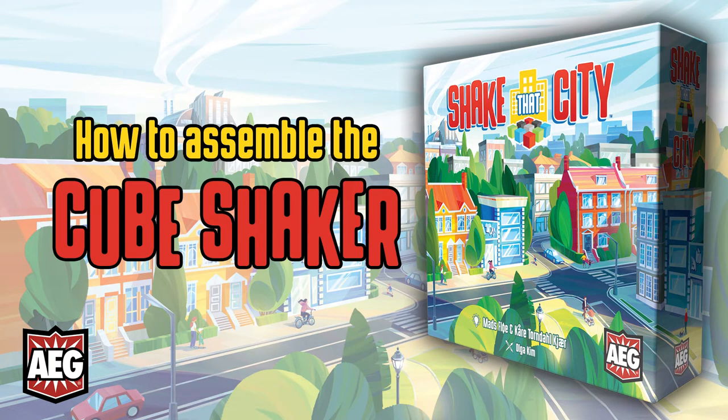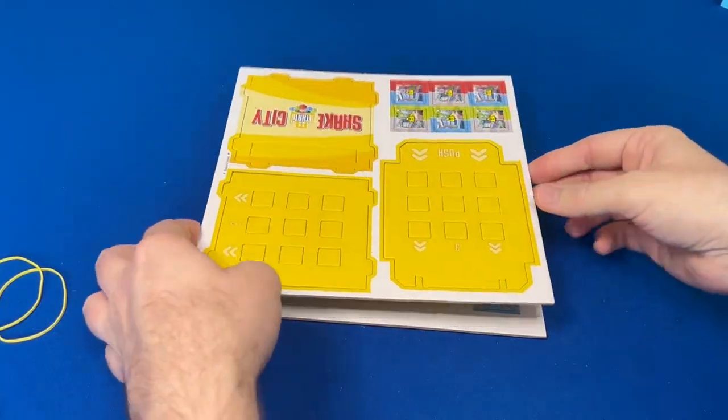Hi, my name's Kirk with the EG, and I'm going to show you how to assemble the Cube Shaker for Shake That City. First, punch out all the shaker parts from the punch board.